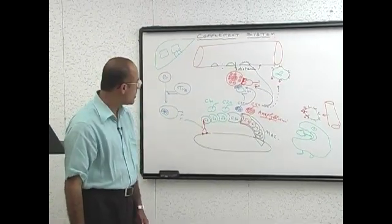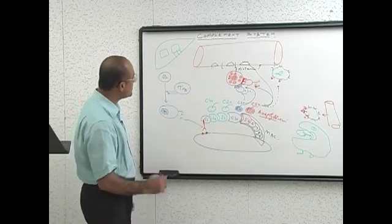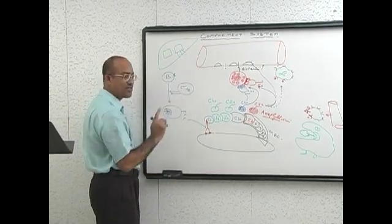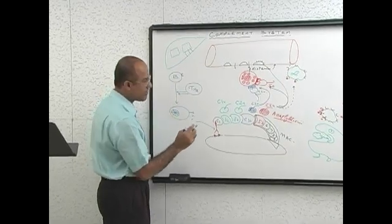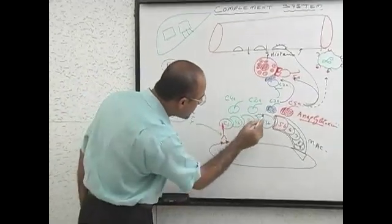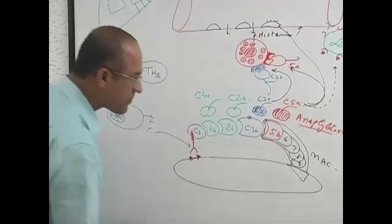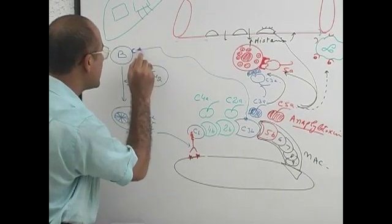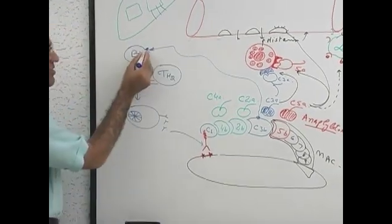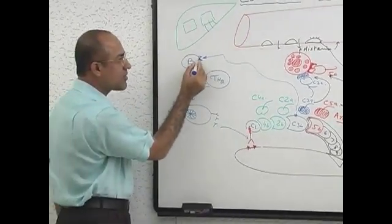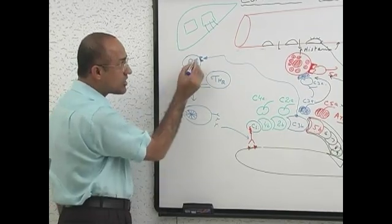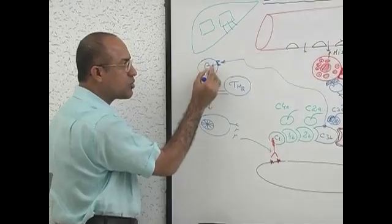B cells have receptors for C3B. Some of these C3B molecules break away and may bind here. This receptor is present on B cells, and when activated, it gives powerful stimulation to the genetic material of B cells.